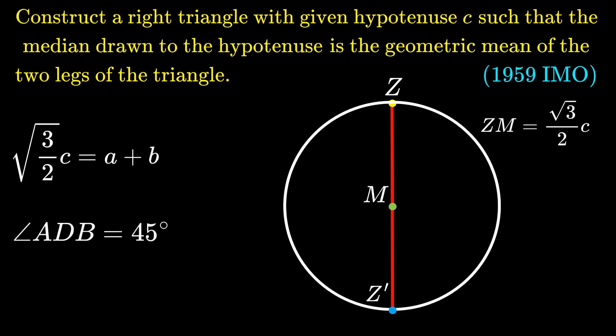We can then construct the perpendicular bisector of segment ZZ' and denote S as the intersection point of the perpendicular bisector and the circle. Then triangle ZMS is an isosceles right-angled triangle with the length ZS equal to √(3/2) · C, and this is the length we want to construct.